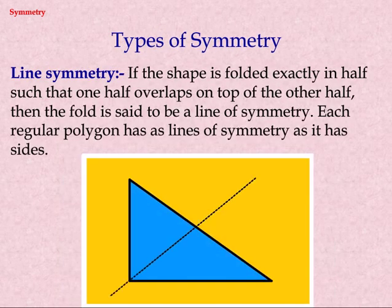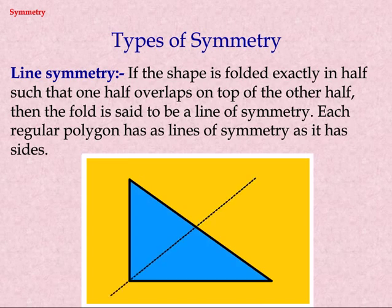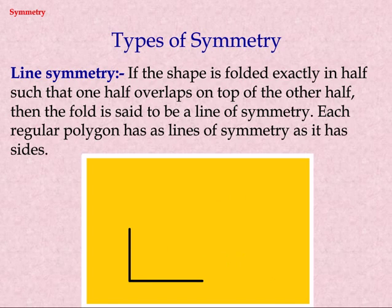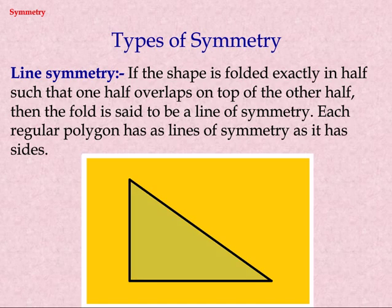Types of symmetry. Line symmetry: if the shape is folded exactly in half such that one half overlaps on top of the other half, then the fold is said to be a line of symmetry. Each regular polygon has as many lines of symmetry as it has sides.